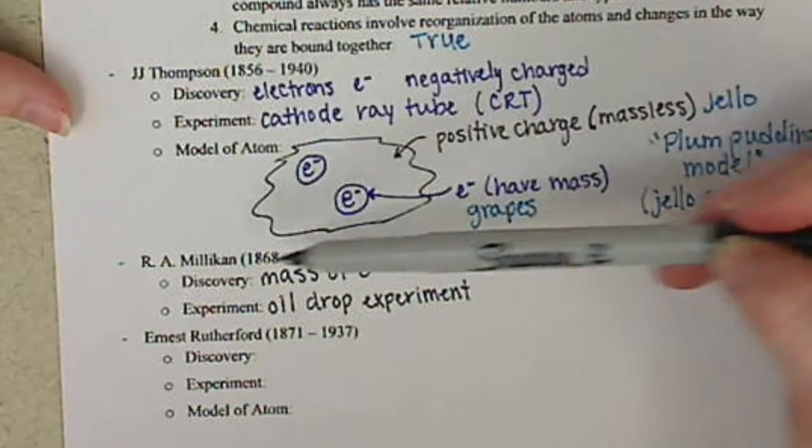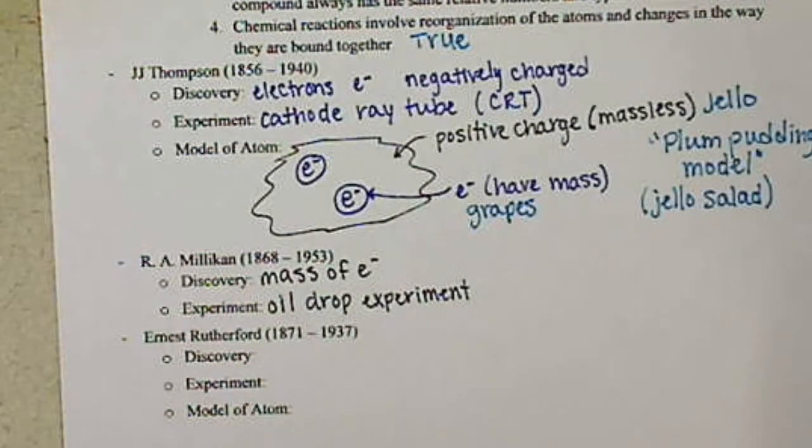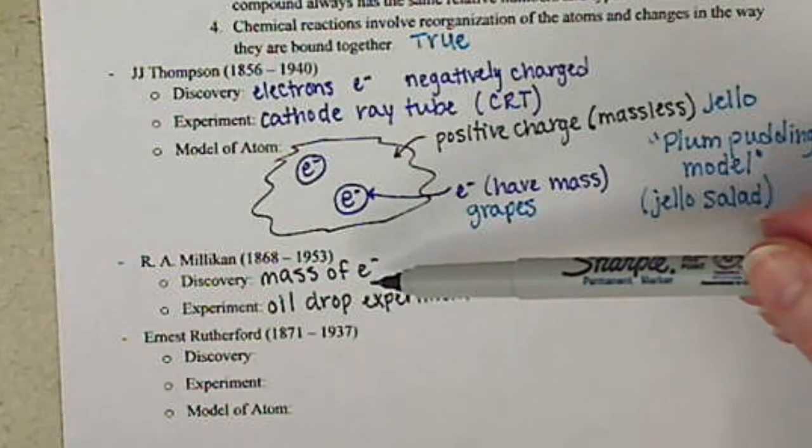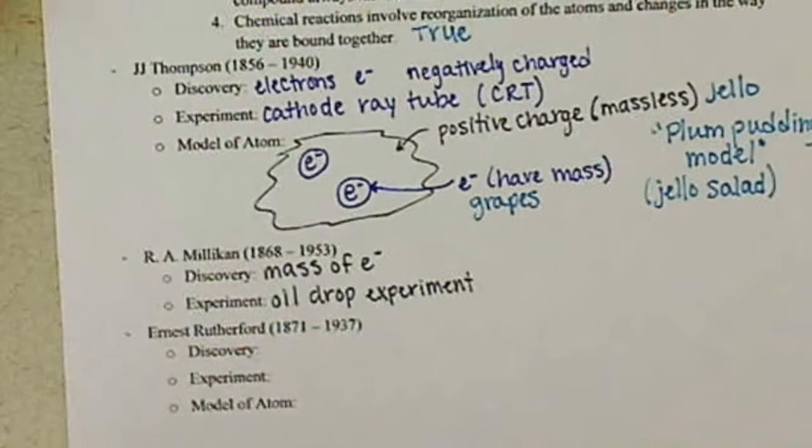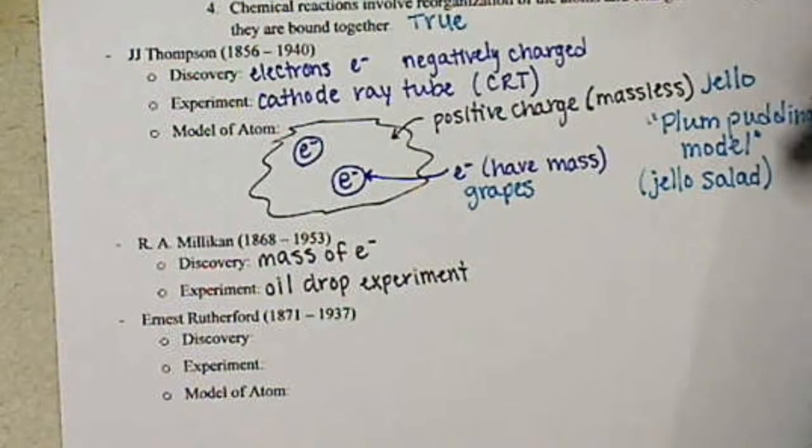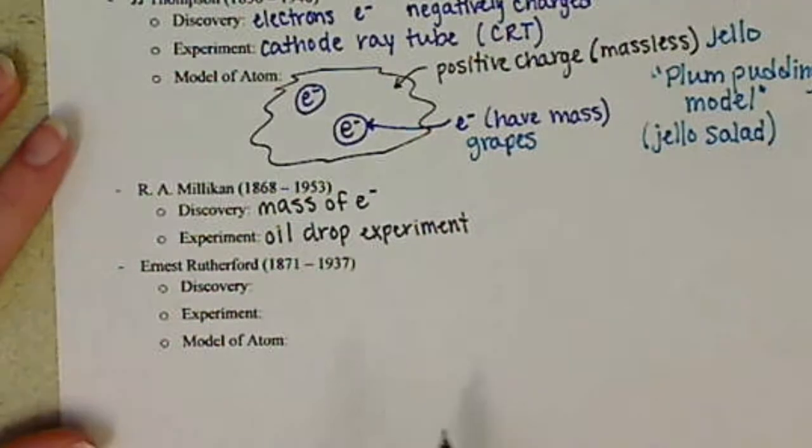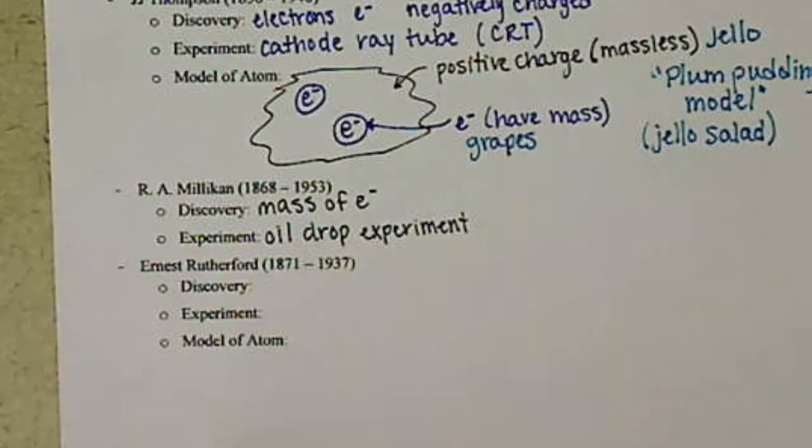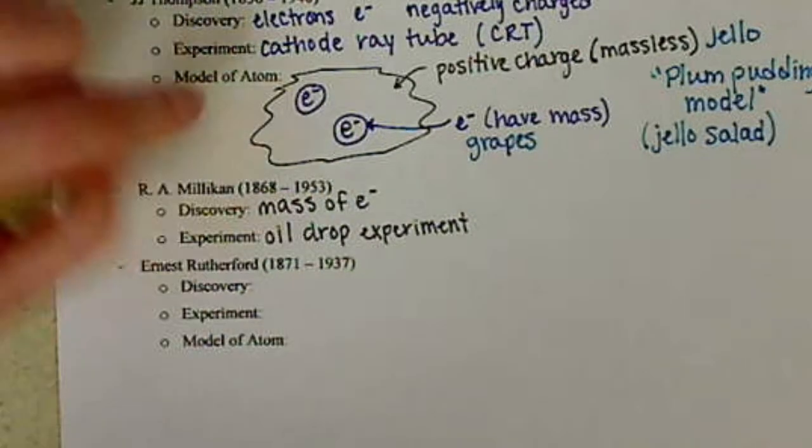So through JJ Thompson and Millikan, they're able to determine, yes, we have electrons that are negatively charged. And we have the mass of the electrons. So in steps Rutherford, Ernest Rutherford, and he started looking at basically, okay, if we have these, this model here.